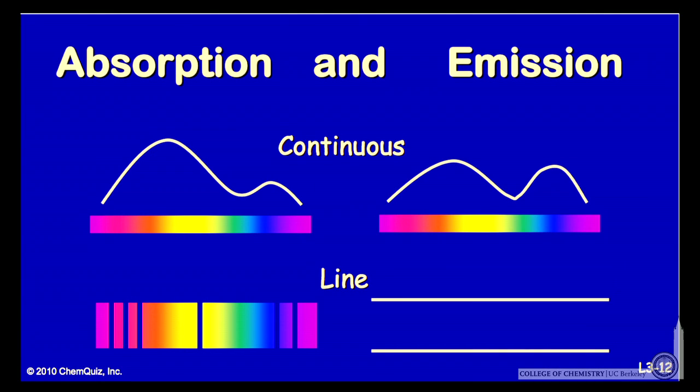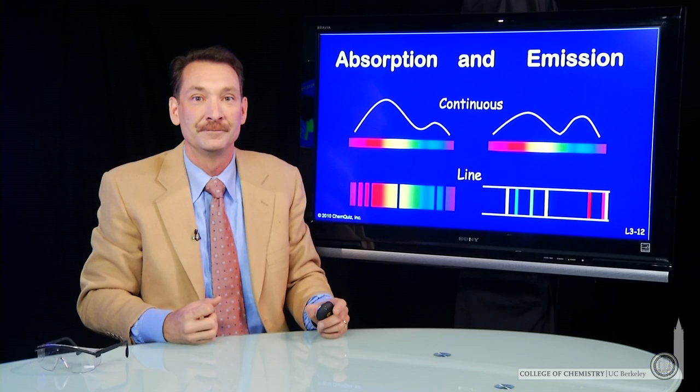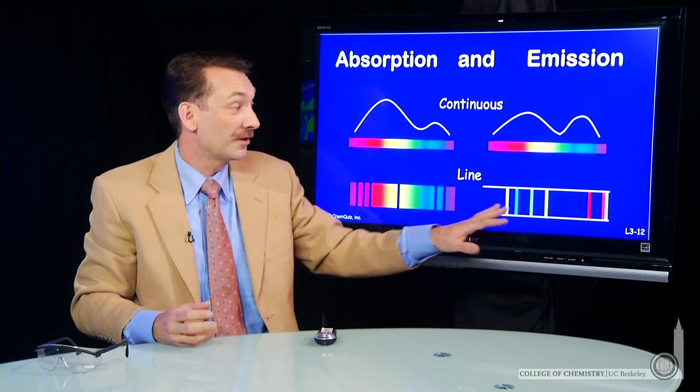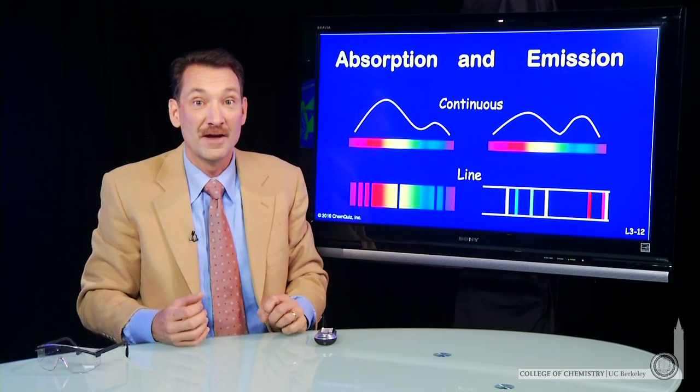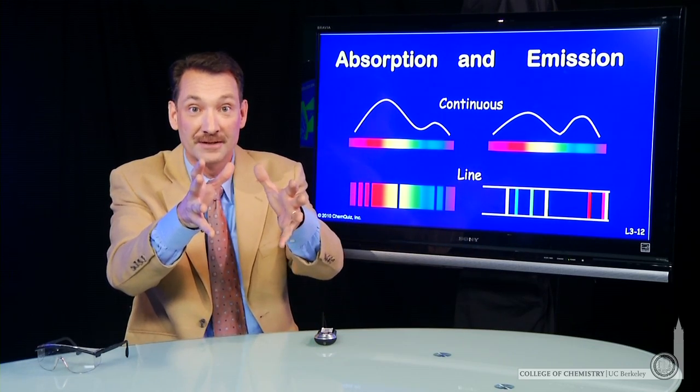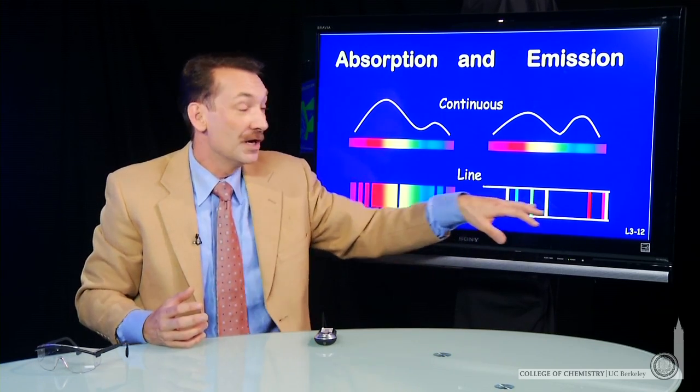Now, you could also have that in emission. You could have only certain wavelengths emitted from an excited atom or molecule or excited matter. Again, this would help you perceive color. If a blue and a green and a yellow wavelength were emitted from an object, that object would appear greenish-blue.